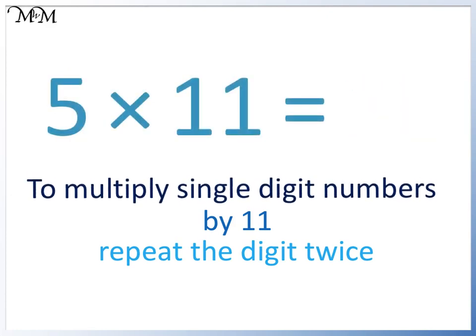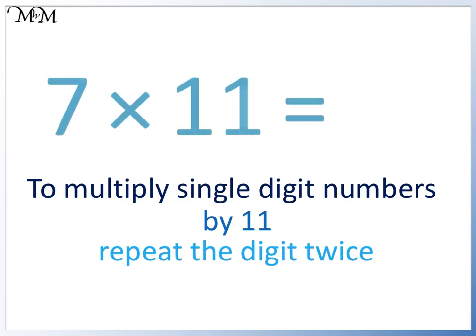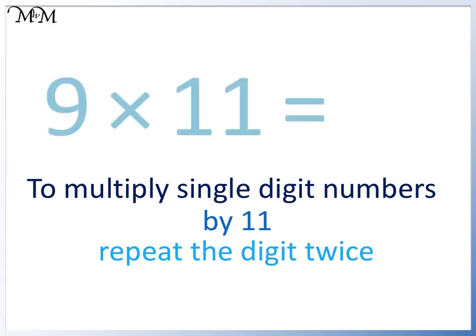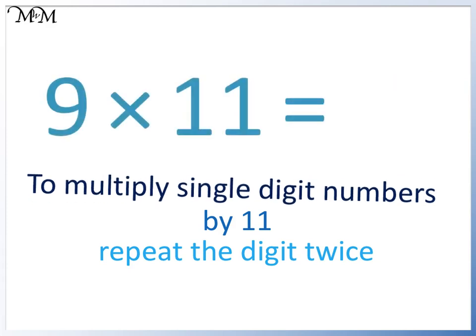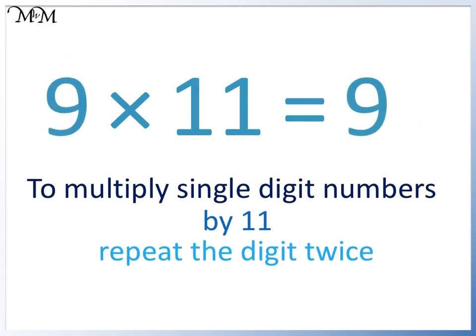5 times 11 is 5 repeated twice — 5 times 11 equals 55. 7 times 11 is 7 repeated twice — 7 times 11 equals 77. 9 times 11 is 9 repeated twice — 9 times 11 equals 99.